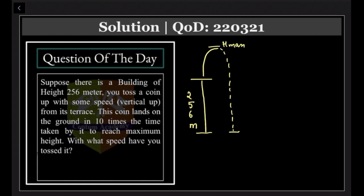Now what it is stating is that the coin lands on the ground in 10 times the time taken by it to reach the maximum height. That means from here going this whole way up and then coming down is 10 times the time. So this whole journey is 10t. Easy, easy.